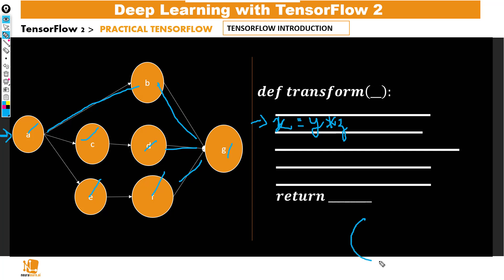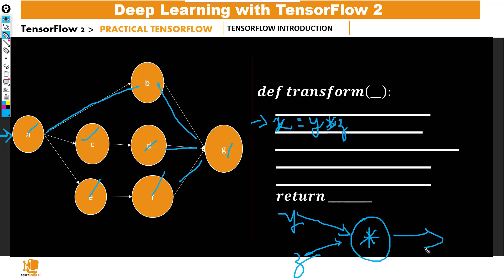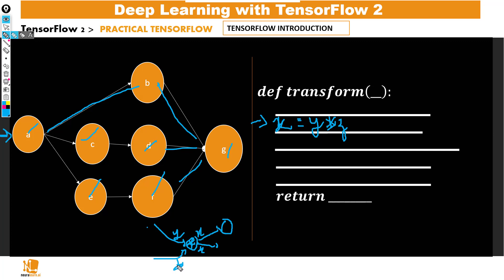into a graph with a single node where that node represents the multiplication operation. So here we have the multiplication operation with two inputs y and z, then our output x. This x can then be passed into two further operations — addition and subtraction — which could be combined to finally yield another result.